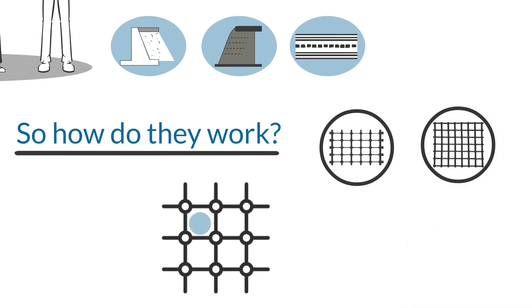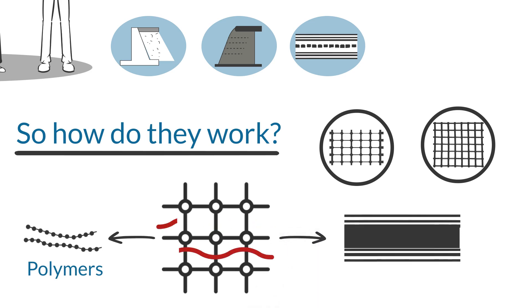A geogrid is a flexible mesh with open apertures made from synthetic polymers. The open aperture of the grid allows it to interlock with the surrounding material, stabilizing or reinforcing the soil or gravel.